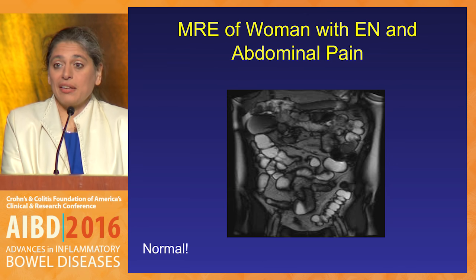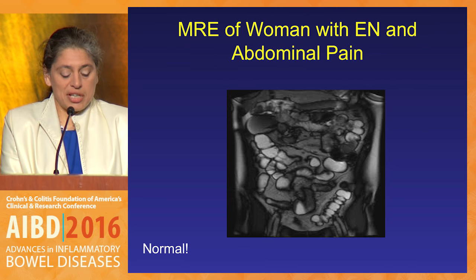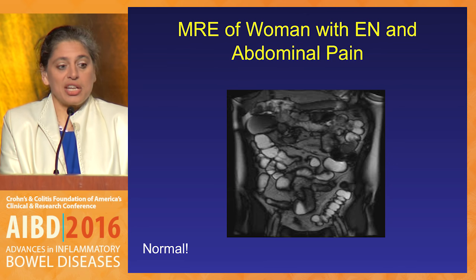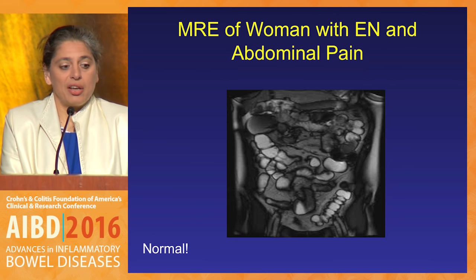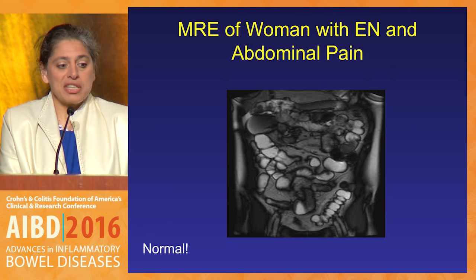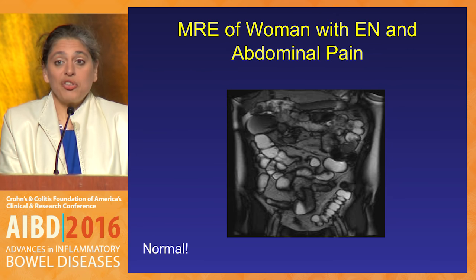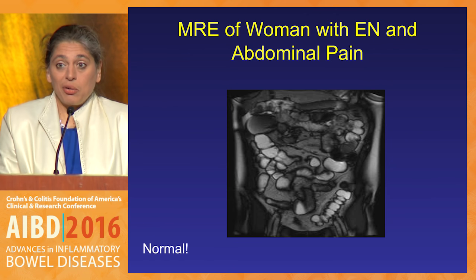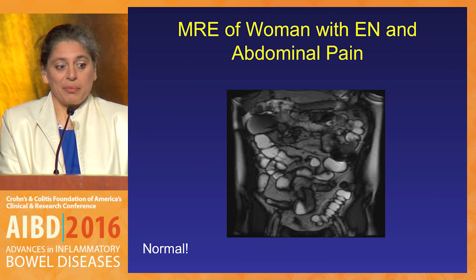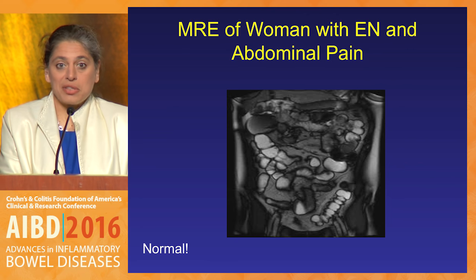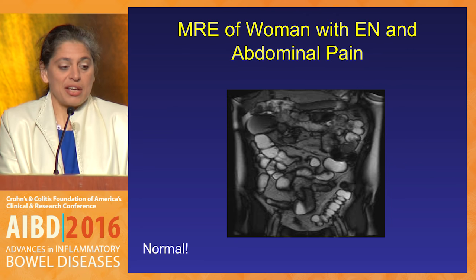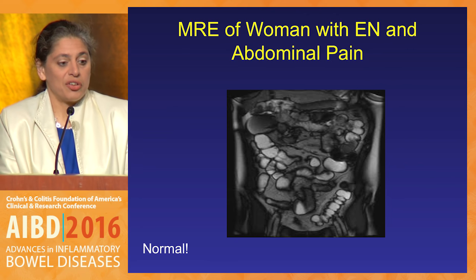Here is an MRE of a woman with erythema nodosum — an extra-intestinal manifestation — and abdominal pain. So she has to have Crohn's, right? Here's a sample of her MR and it is completely normal. She had erythema nodosum because she had a viral syndrome.